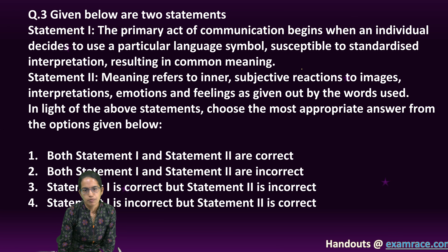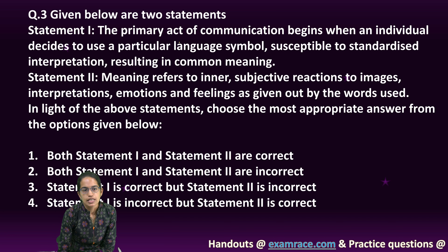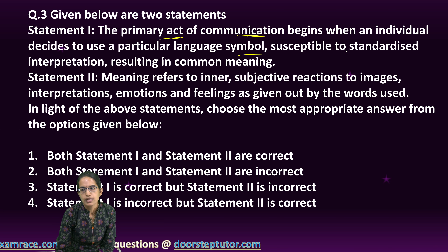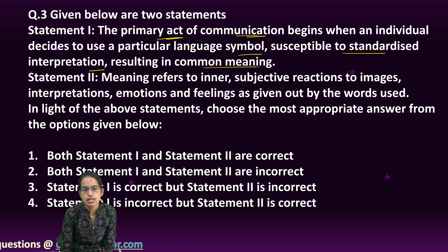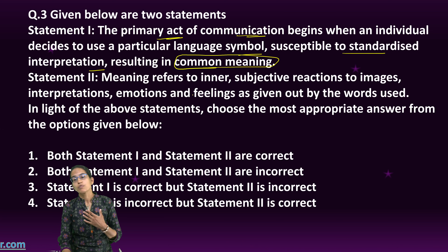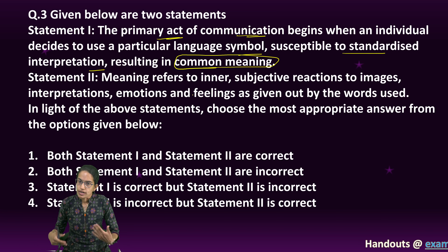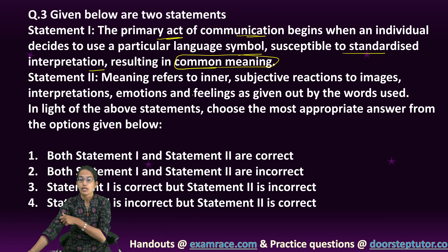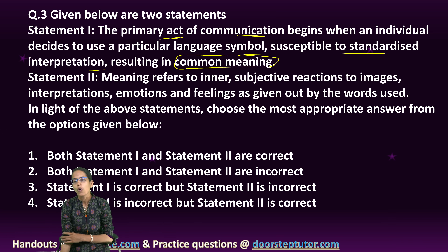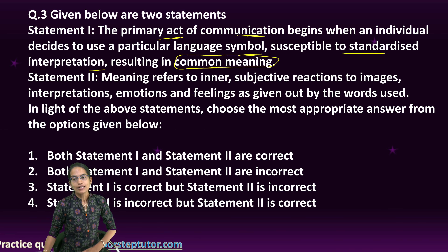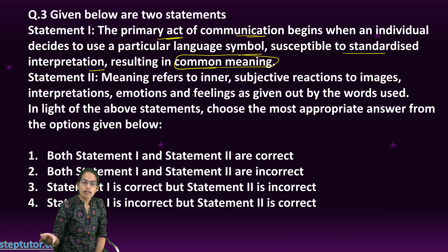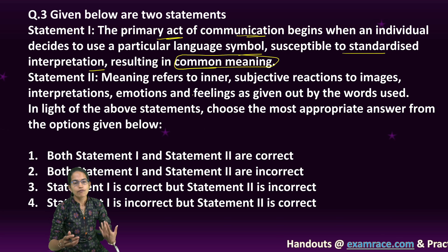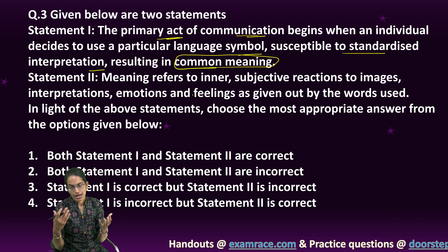The next are two statements based on communication. The first statement says the major act of communication begins when an individual decides to use a particular symbol susceptible to the standard interpretation, resulting in a common meaning. That's true — if I try to convey something, you must be able to understand it. For example, if I speak German and you don't understand German, there is no common meaning and therefore no communication.